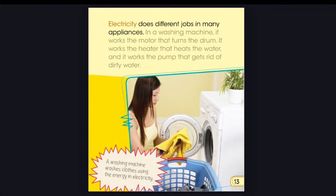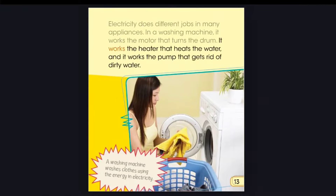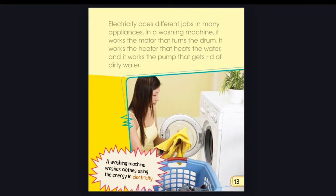Electricity does different jobs in many appliances. In a washing machine, it works the motor that turns the drum, the heater that heats the water, and the pump that gets rid of dirty water. A washing machine washes clothes using the energy of electricity.